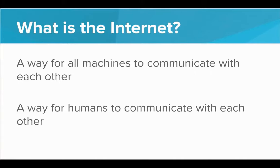So really, what is the Internet? The Internet is a way for all machines to communicate with each other, and thereby a way for humans to communicate with each other. Any human with a machine that is online is able to communicate with any other human that has Internet access. And this is huge — this is the first time this many humans have been able to communicate.